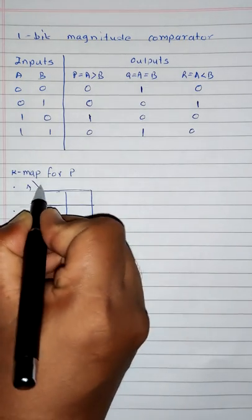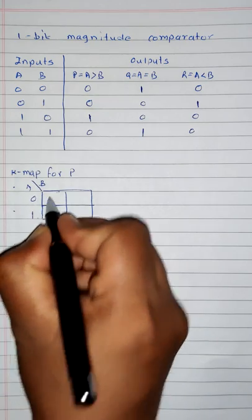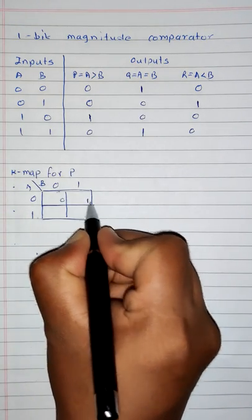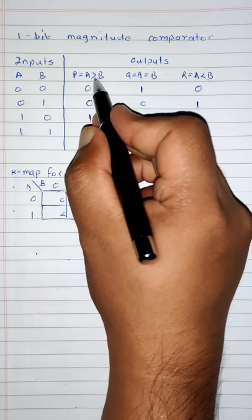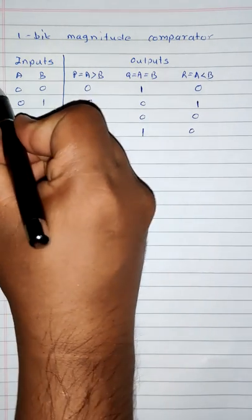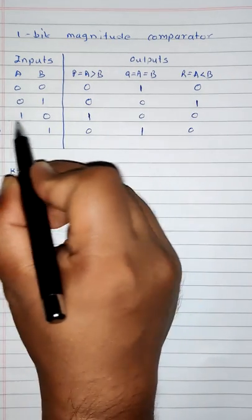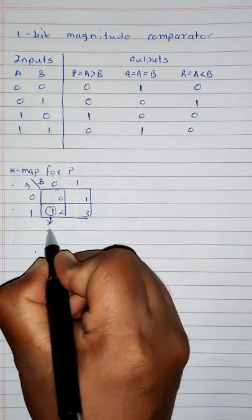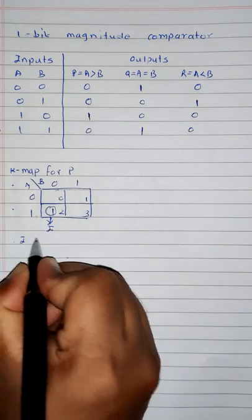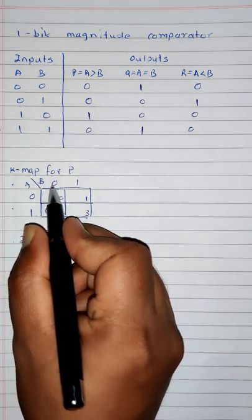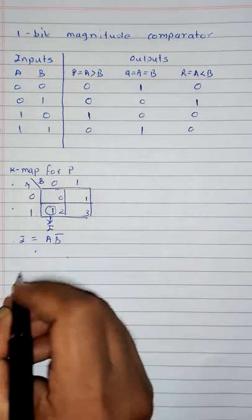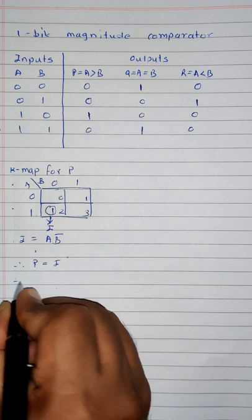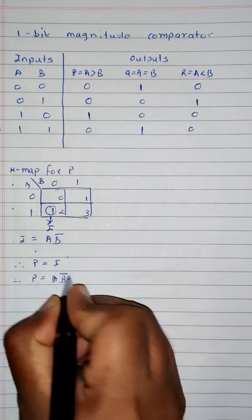The variable names will be A and B with values 0 and 1. Each cell is numbered 0, 1, 2, 3. For P, which is A greater than B, the output is 1 only at cell 2 (A=1, B=0). So we write 1 at cell 2 — this is the only group. Group 1 gives A=1, B=0, which is AB̄. Therefore, P = AB̄.